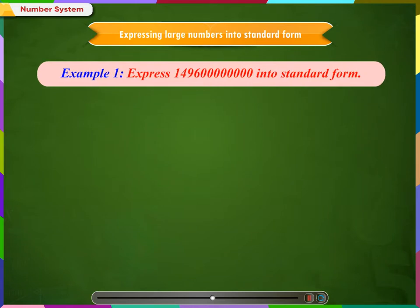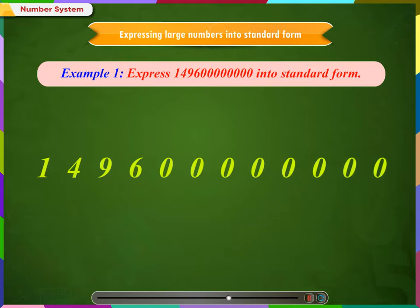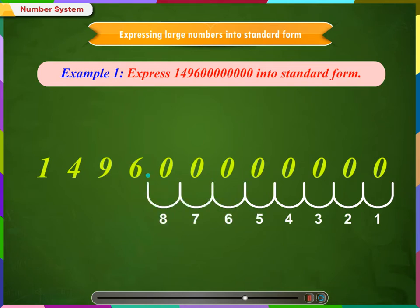Let us now see how we express very large numbers into standard form. In this number, there is no decimal point shown. So, we put a decimal point at its right end. Now, count the number of digits to the left of decimal point. There are, in all, 12 digits to the left of point.